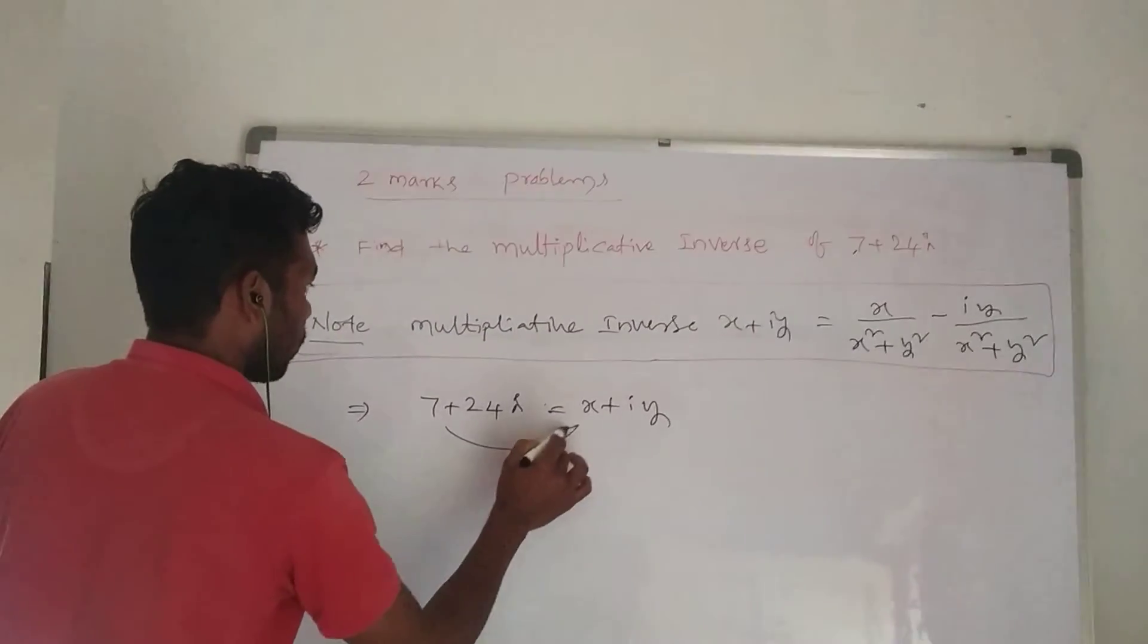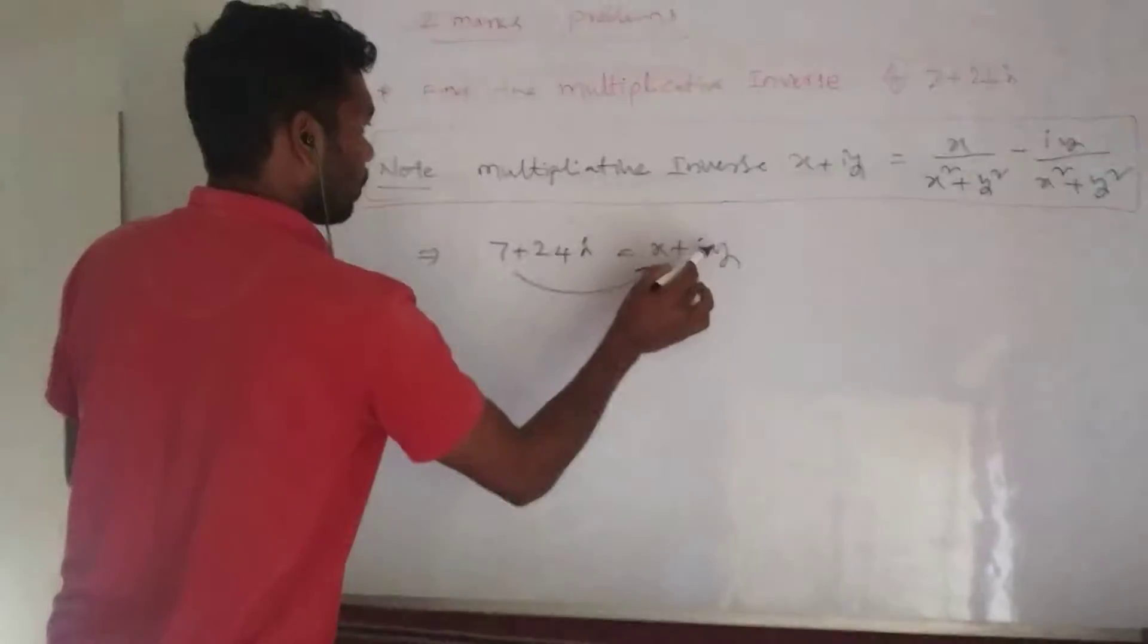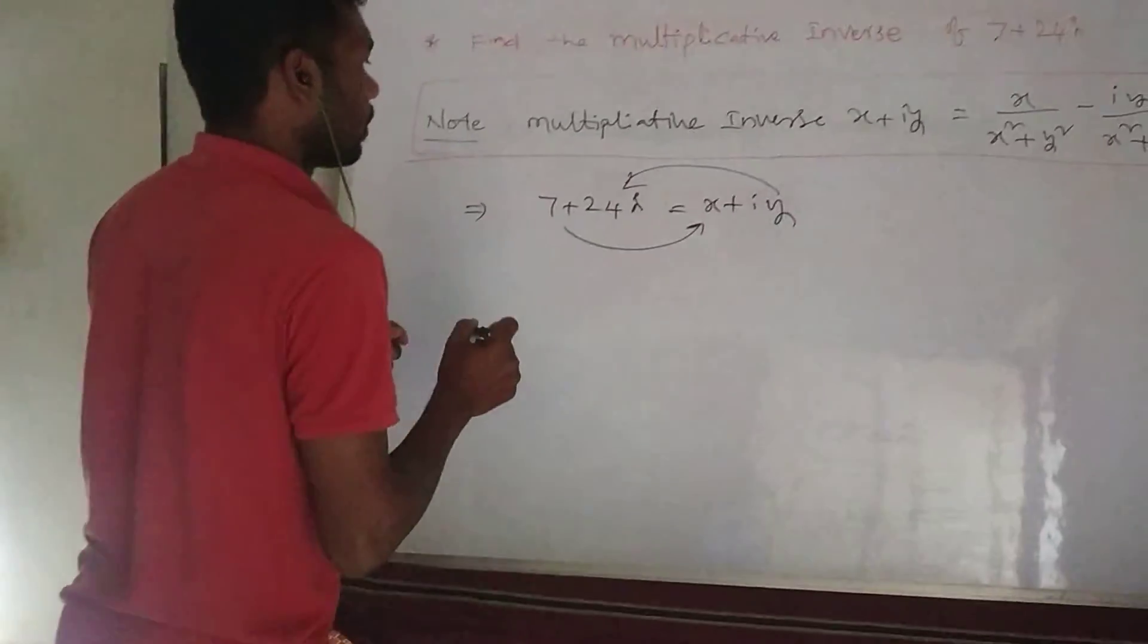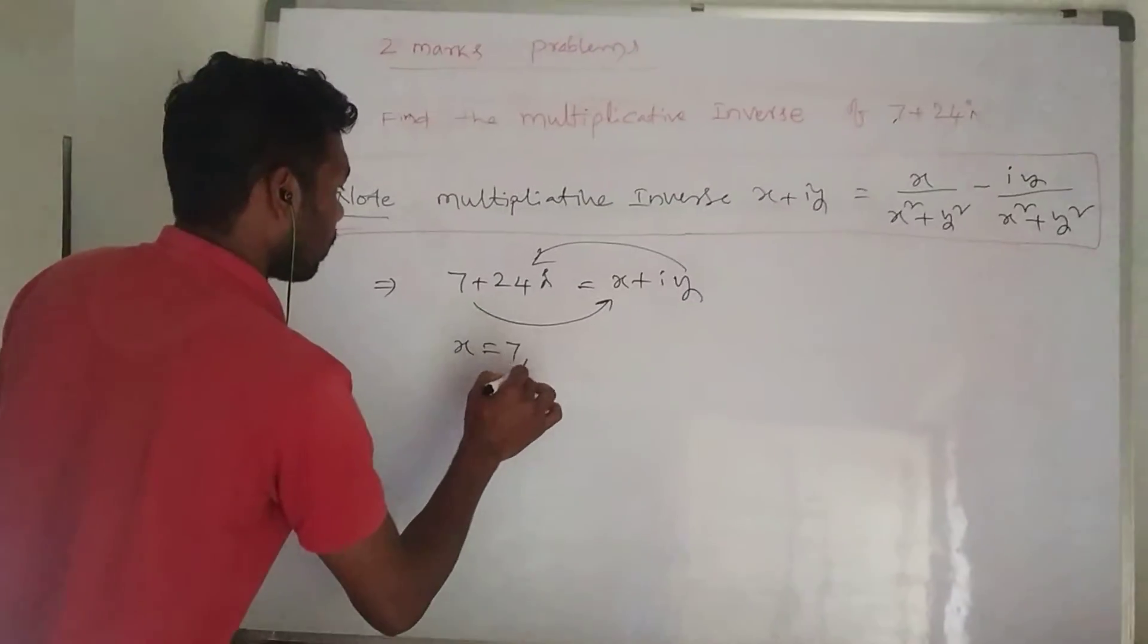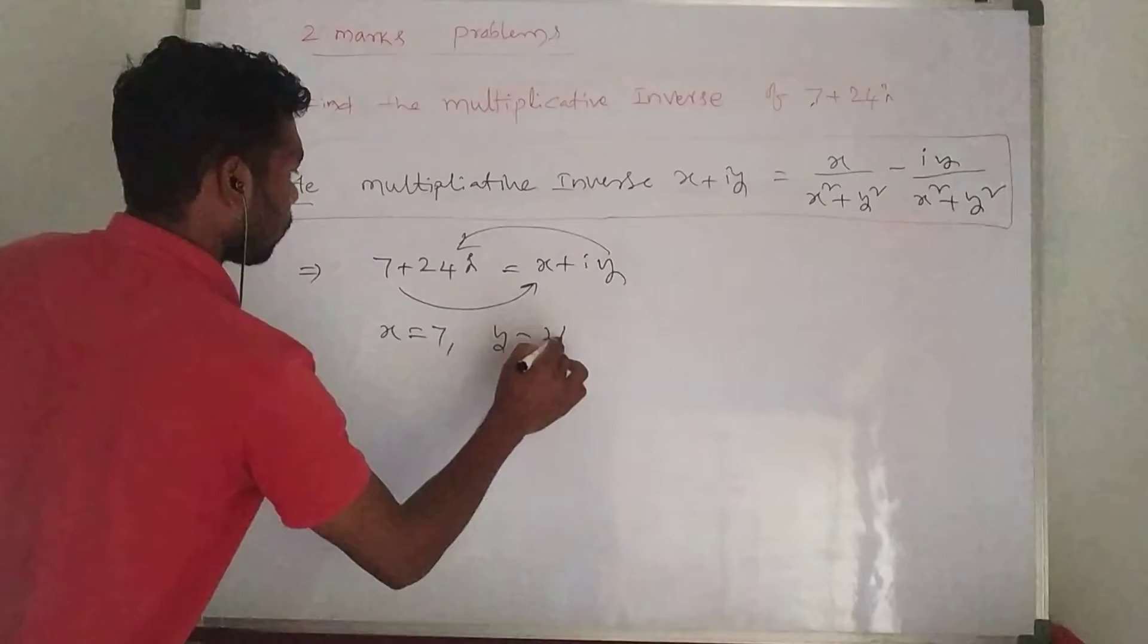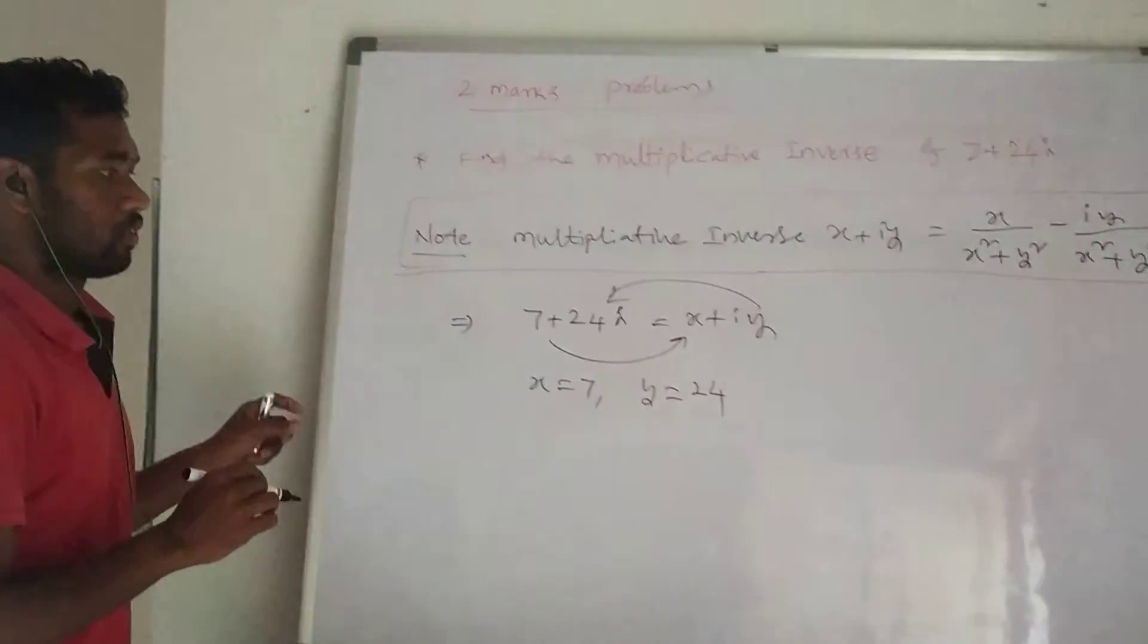Comparing with x plus iy, we get x equals 7 and y equals 24.